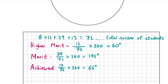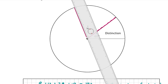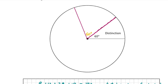You can use your protractor to draw in 60 degrees, 195 degrees and 65 degrees for the three sectors: higher merit, merit and achieved. Get your protractor, put the line on the bottom along the baseline, and then measure 60 degrees for the area that will be the higher merit section. Make sure there are 60 degrees in there — that's the section for higher merit.